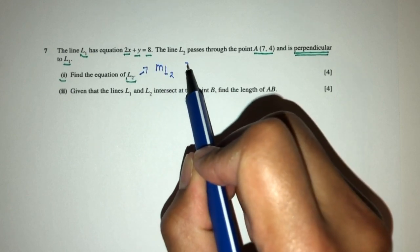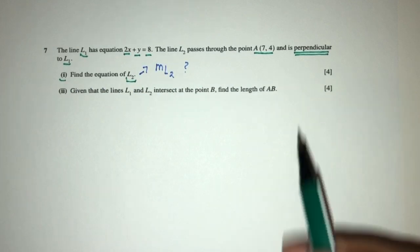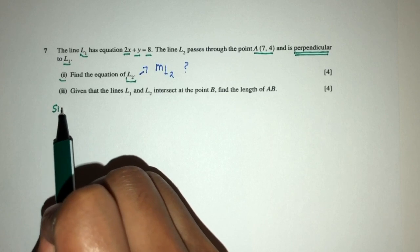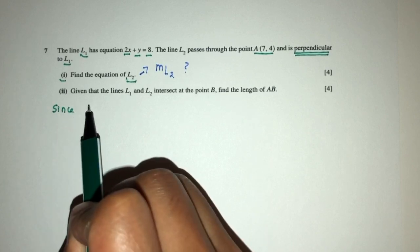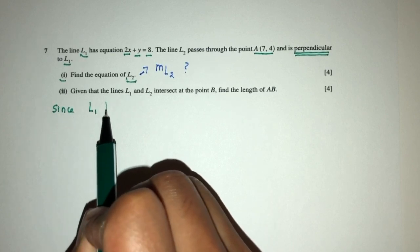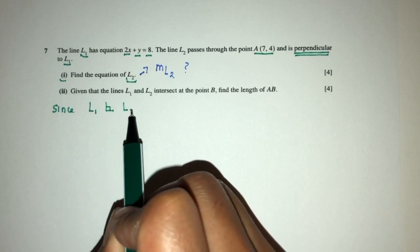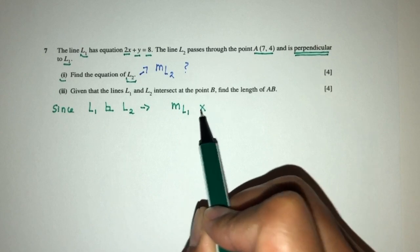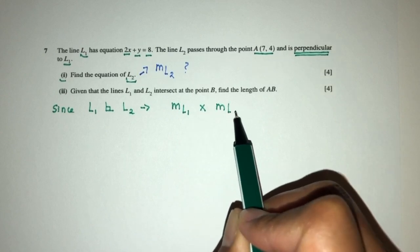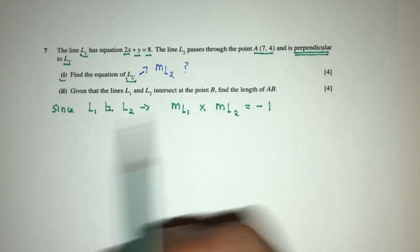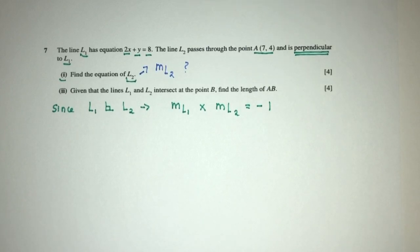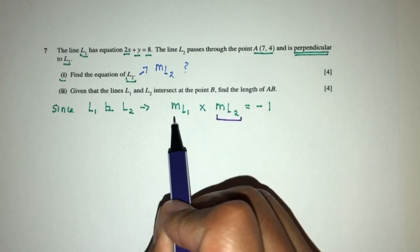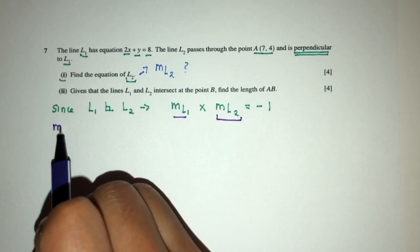How do you find the gradient of L2? We understand that the line is perpendicular to L1. Since we know that L1 is perpendicular to L2, we can use this knowledge. The gradient of L1 multiplied by the gradient of L2 has to give you the value of minus 1. That's what we have to know for this question. To find this, we need to first find the gradient of L1.